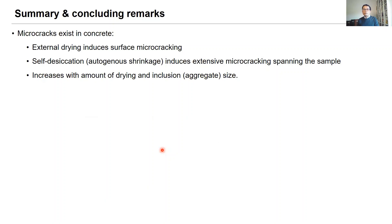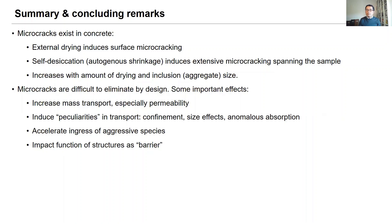Here are some concluding remarks and takeaway messages. I hope I've given you a good overview and evidence that microcracks exist in concrete. External drying causes surface microcracking concentrated within the first few millimeters from the surface, while self-desiccation produces much more extensive, interconnected microcracking distributed throughout the entire sample. In all cases, microcracks increase with drying severity, with shrinkage, and with increase in aggregate size. These microcracks are difficult to control or eliminate by structural design alone, and they induce important effects — they increase transport especially permeation, and they induce anomalous behaviors such as confinement effects and anomalous absorption. They also accelerate ingress of aggressive species and impact the ability of certain structures to perform as a barrier to flow.